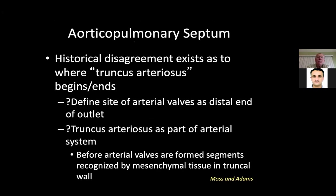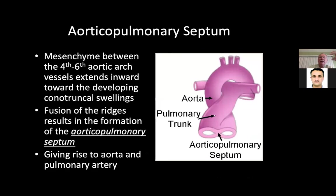The aortic pulmonary septum — there is disagreement on exactly how this all comes about. The truncus arteriosus is a part of the arterial system before the arterial valves are formed, and segments are recognized by the mesenchymal tissue in the truncal wall. The mesenchyme between the fourth and sixth aortic arch extends inward toward the developing conal truncal swellings, and the fusion of the ridges results in the formation of the aorticopulmonary septum. Dr. Fatun sees this twisting of the aorta and pulmonary clearly in the operating room.